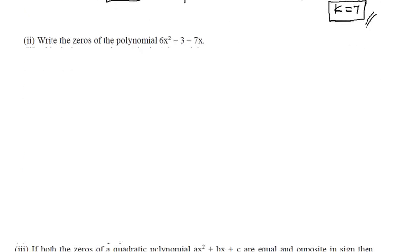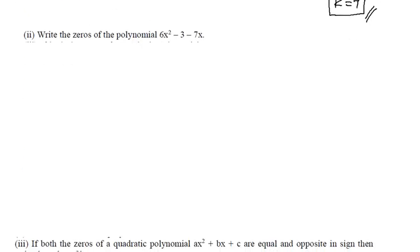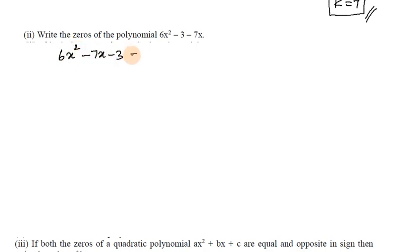k equals 7 is the answer. Next, the second subdivision: write the zeros of the polynomial 6x² - 7x - 3.